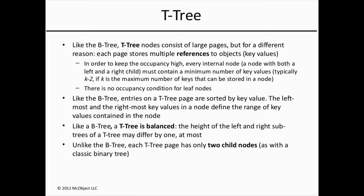Conversely, a significant amount of memory can be saved by not storing the data in the index structure. Each T-tree page stores multiple references to objects. Unlike B-trees, where each node is usually less than half full, for an in-memory structure we want a high occupancy rate so as not to waste memory. Internal nodes contain a minimum number of references to key values, usually K-2, where K is the maximum number of key references that can be stored in a node. Like the B-tree, entries on a T-tree page are sorted by key value, and the tree is maintained to be balanced. But unlike the B-tree, each T-tree page has only two child nodes, so the tree can get deeper.